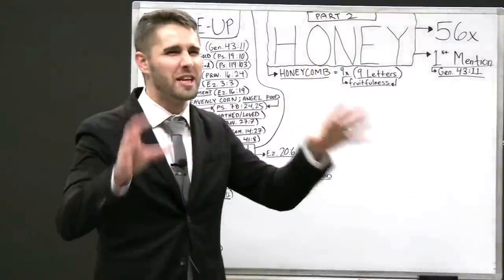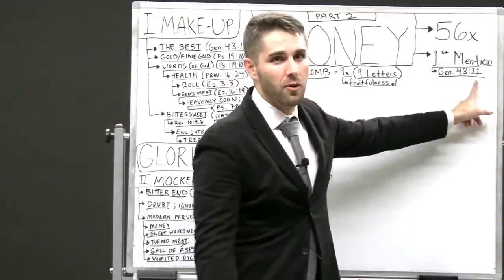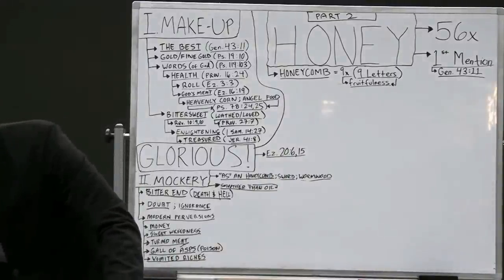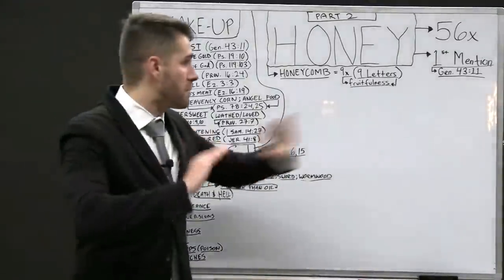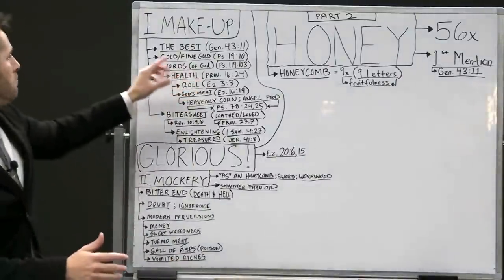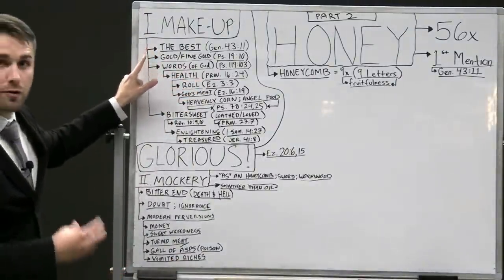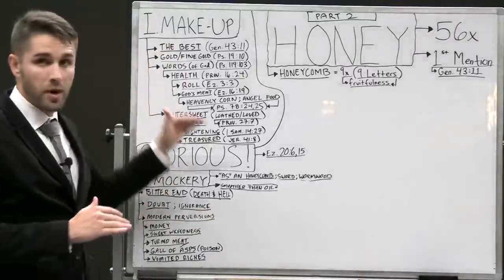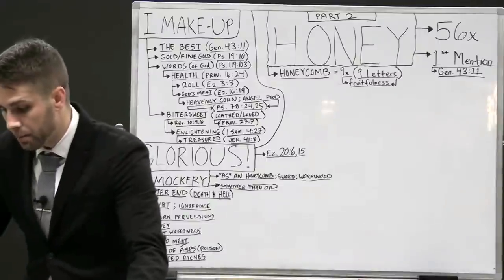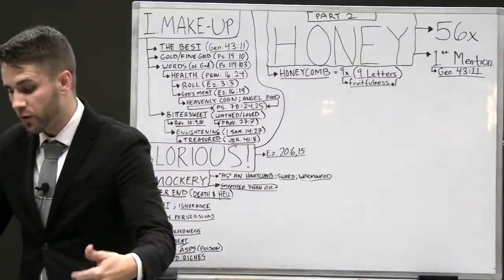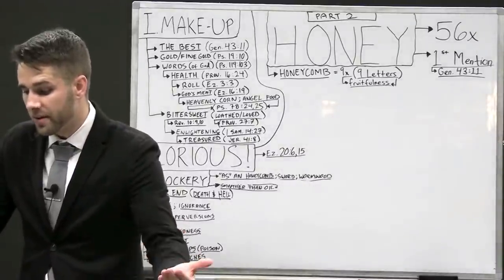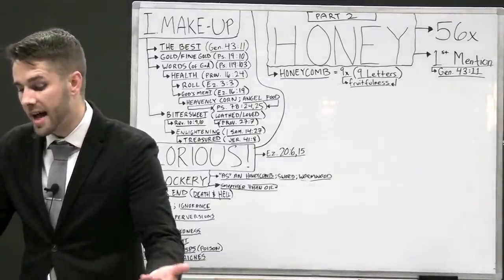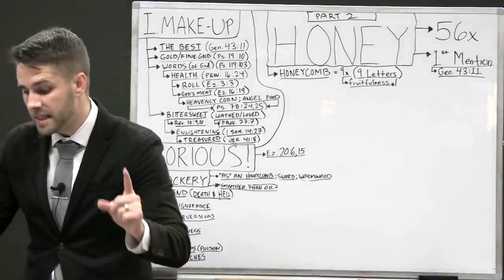In that occurrence, it has to do with the best fruits that are brought in the midst of a famine. The best fruits are brought in the midst of a famine to the greatest type of Jesus Christ for a soon-to-be feast. And if you were to look at that passage, there are nine items that are brought. Fruitfulness. And 43 plus 11 is 54, which is nine times six.